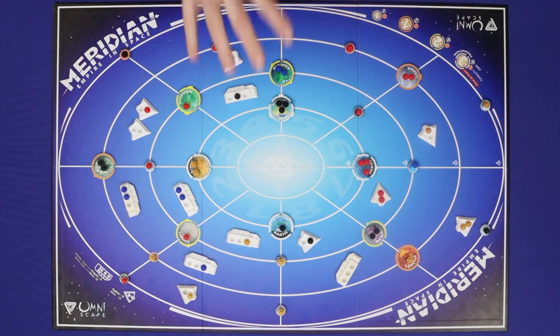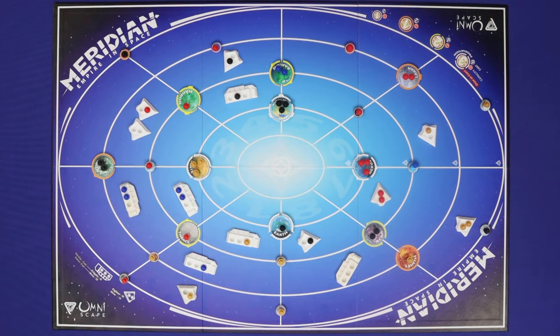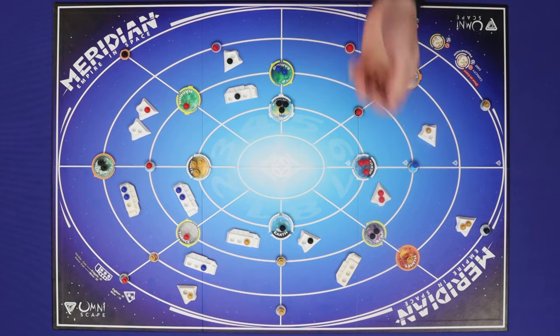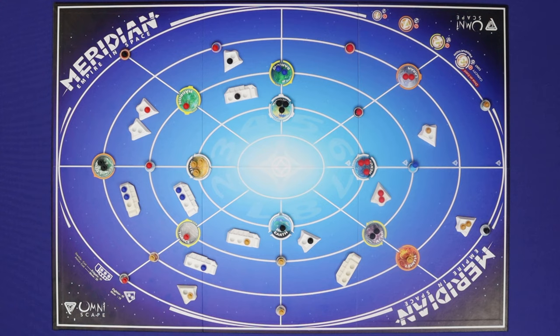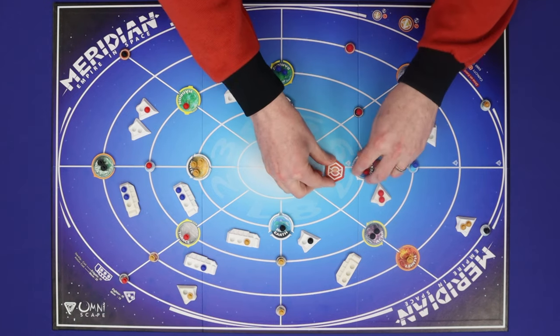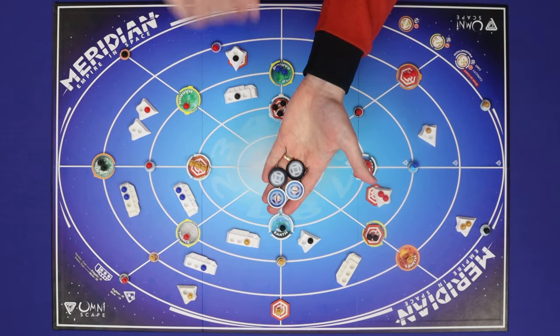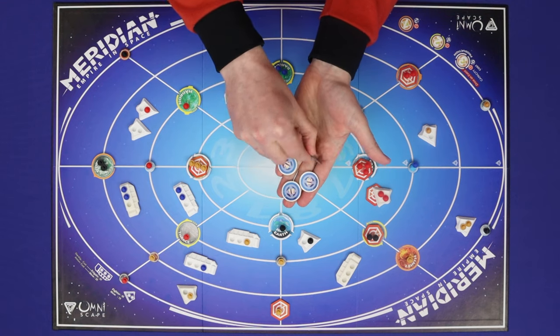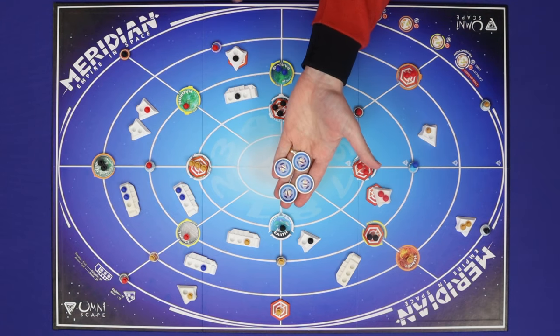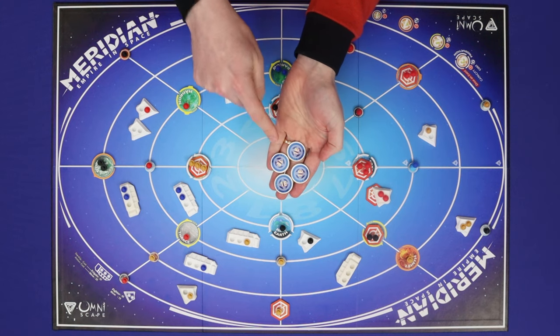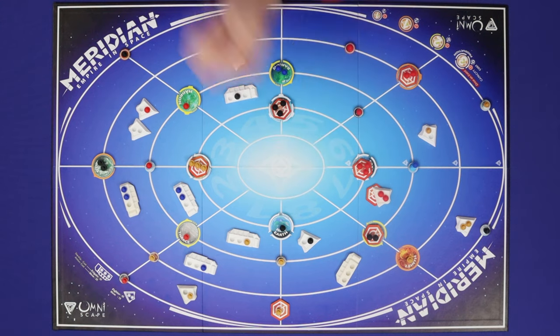Each player now counts up the number of different sectors where they have presence. The player with presence in the fewest sectors gains one victory token, the next fewest gains two, and so on until all players have a number of tokens. If there is a tie for sectors, each tied player receives the lower number of tokens. Players now place each victory token on a planet, moon, or ship they control. As for the domination ending, all players now renew all of their cells, and the final round will start from the player who has the most energy cells and proceed around to the player with the fewest.